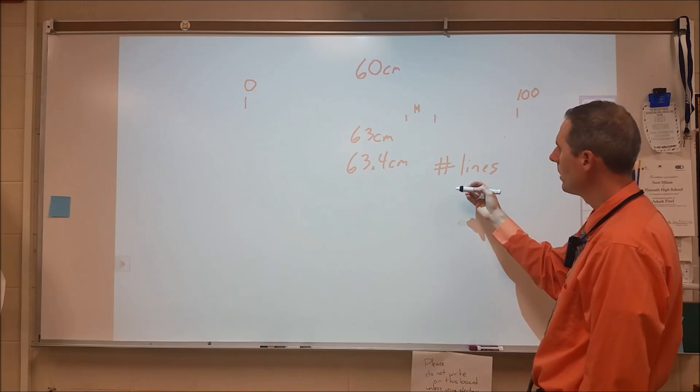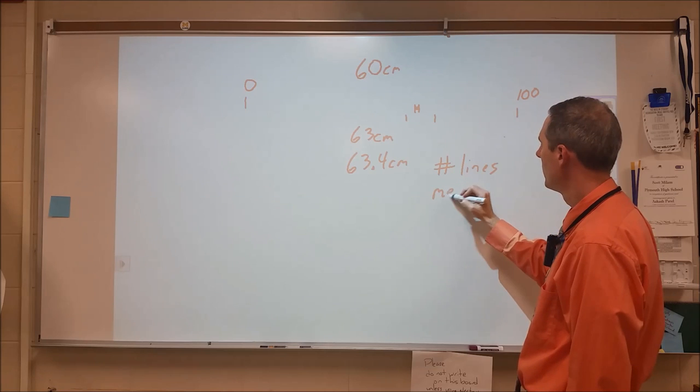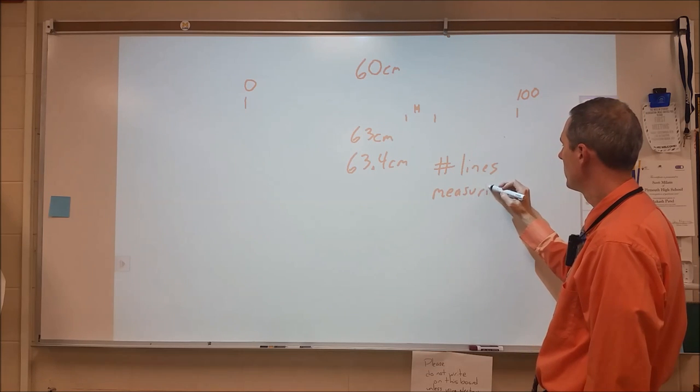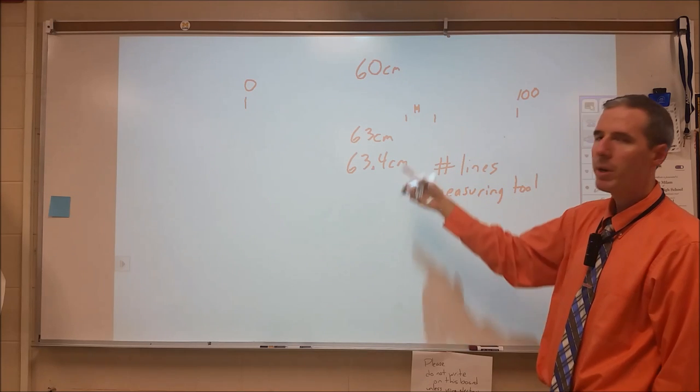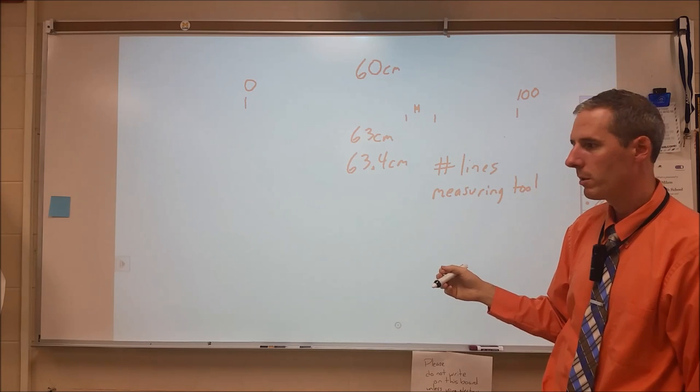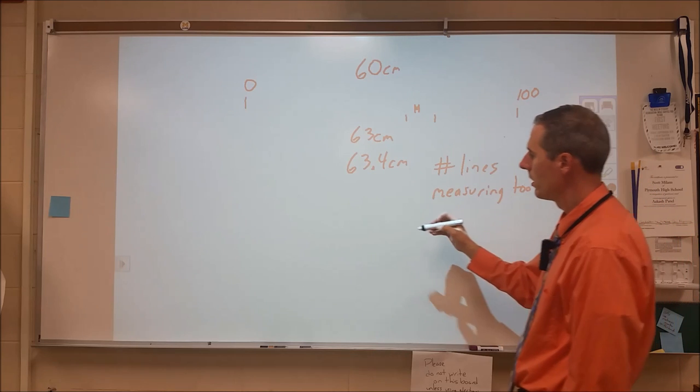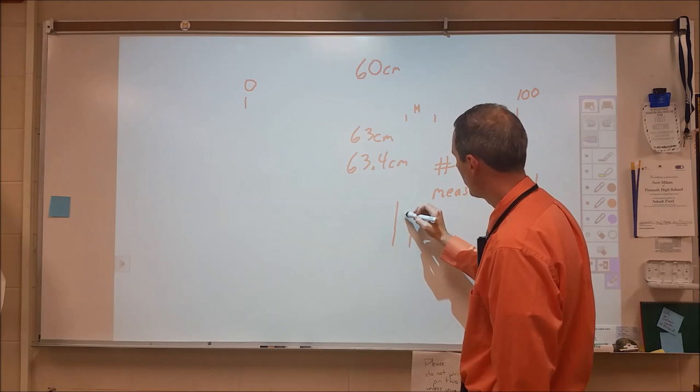So what we're seeing here is that the number of lines spacing, or the value of the lines spacing on your instrument, on your measurement apparatus, dictates how many numbers you should write down for your measurement. So the rule of thumb is this.